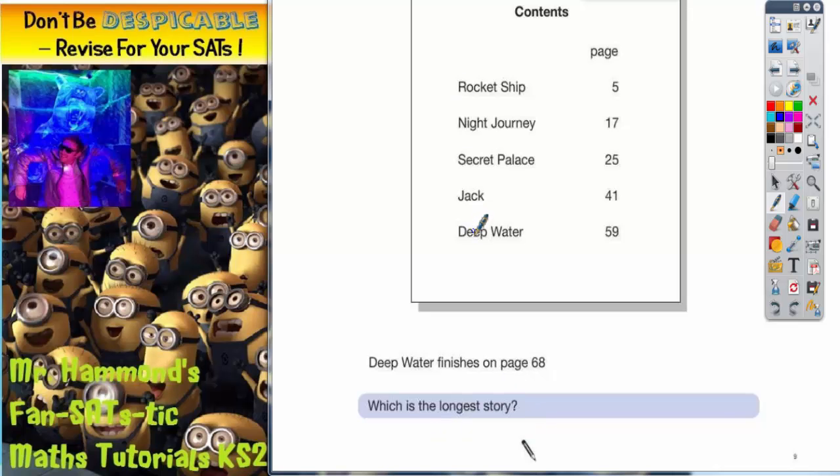So here are our 5 stories. We're going to work out how long each story is. We've got the page that it starts on and the page that the next story starts on. So from page 5 up to page 17, that's going to be how long rocket ship is. So what we need to do is find the gap from 5 to 17, or the difference from 5 to 17. If you do 17 take away 5, you're going to get 12. So rocket ship must be 12 pages long.